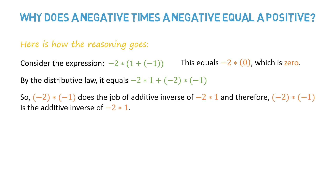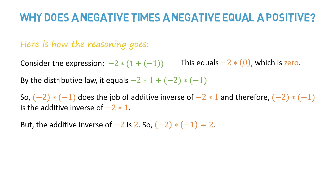So minus 2 times minus 1 does the job of the additive inverse of minus 2 times 1, and therefore minus 2 times minus 1 is the additive inverse of minus 2 times 1. From the previous reasoning, we know that minus 2 times 1 equals minus 2, and minus 2 has exactly one additive inverse, which is 2. So minus 2 times minus 1 equals 2. Therefore, we have to accept the law that negative times negative equals positive.